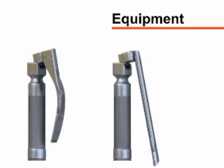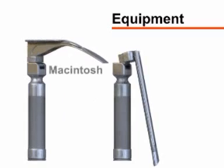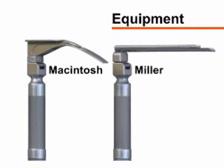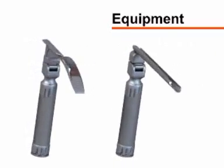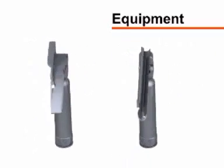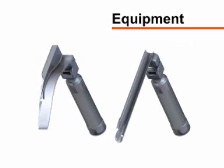There are two main types of laryngoscope blades, each available in various sizes. The tip of the Macintosh blade is curved. The Miller blade is straight, and each requires a slightly different technique. The choice of blade is based largely upon the experience and personal preference of the operator. A size 3 or 4 Macintosh or a size 2 or 3 Miller can be used in most adult patients.